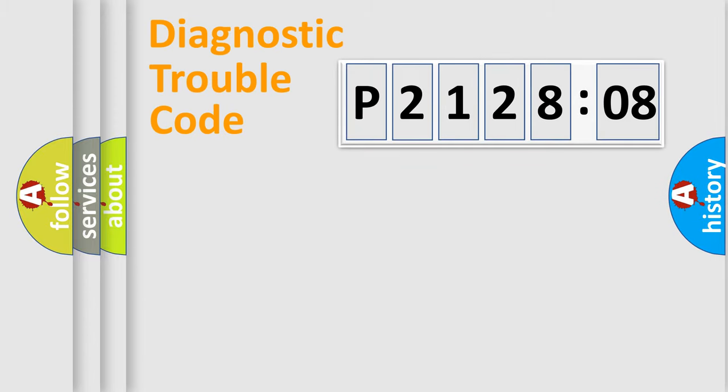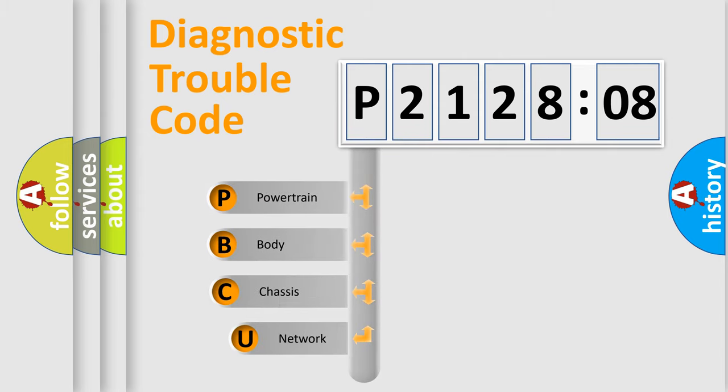Powertrain, body, chassis, network. This distribution is defined in the first character code.